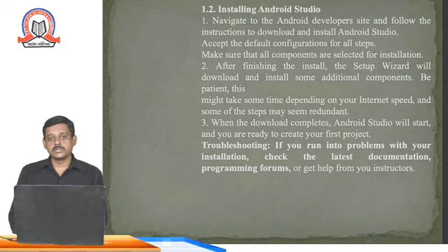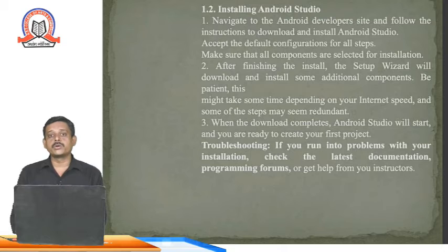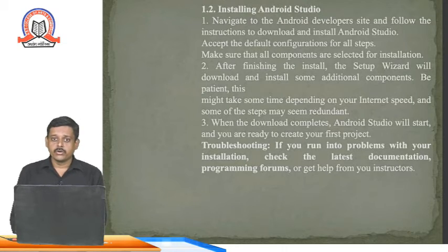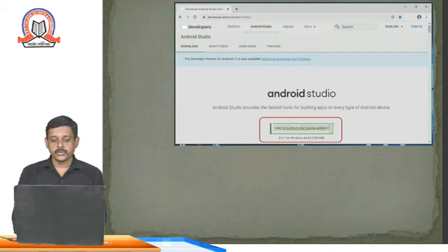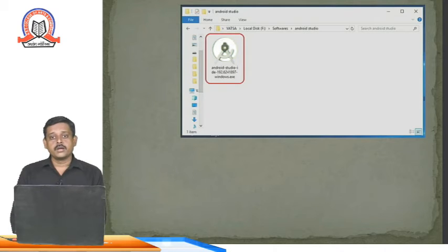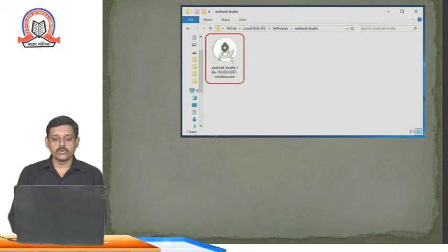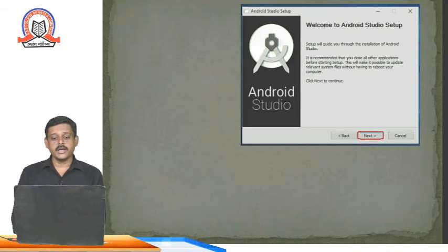After successfully installing Java on your machine — whether Windows, Linux, or Mac OS — we are going to install Android Studio. Keep in mind that installing Android Studio is common for all platforms. Visit the Android developer website to get the download button for the latest version. The file will be nearly 900 MB to 1 GB. Once it appears in your download folder, double-click it to start the installation wizard.